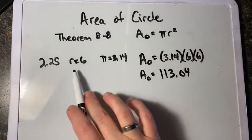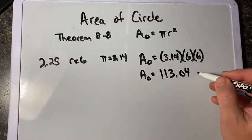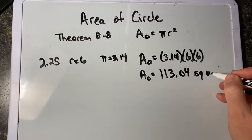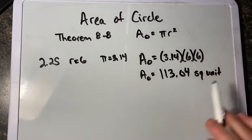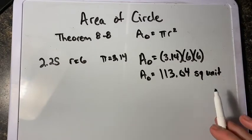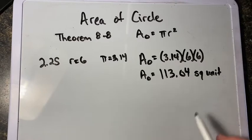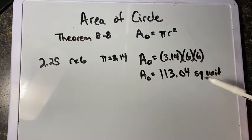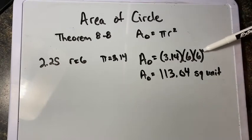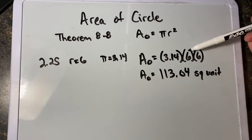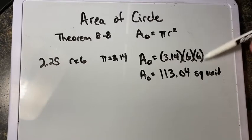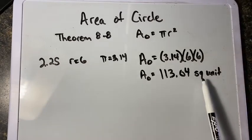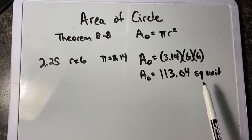They don't specify the square units here, but we need to know that when talking about area, our answer is always going to be something squared — inches squared, feet squared, yards squared. This is because we're squaring the radius: 6 feet times 6 feet gives us 6 feet squared. Areas will always be a squared unit.